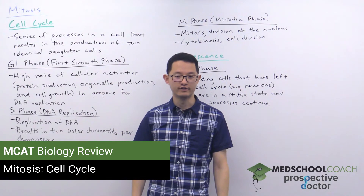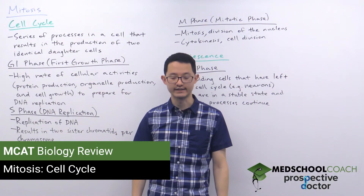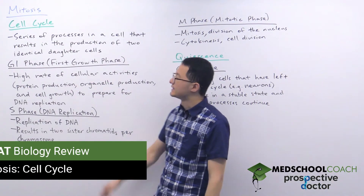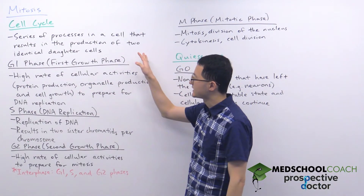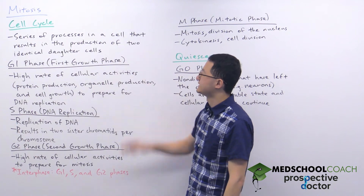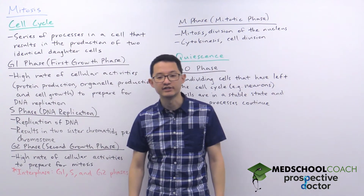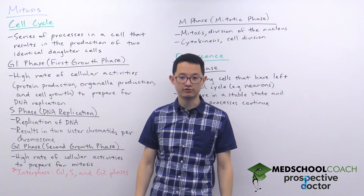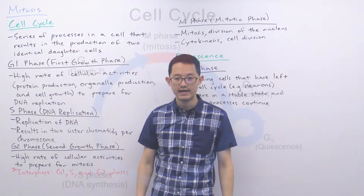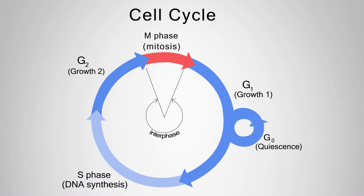In this video we're going to go over the cell cycle. A cell cycle is a series of processes in a cell that results in the production of two identical daughter cells. You can see in this diagram that the cell cycle consists of several phases.